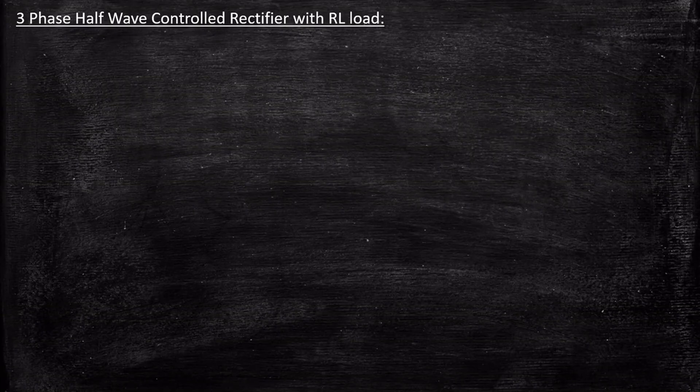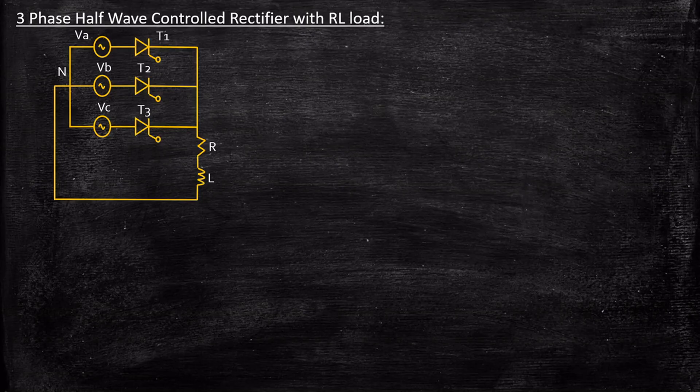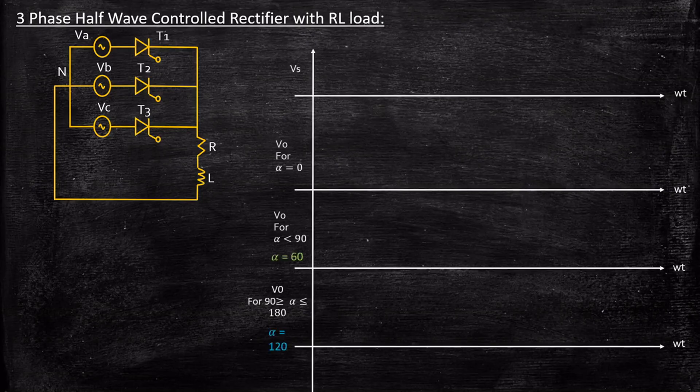Hello everyone. In this video we'll be taking a look at three-phase half-wave controlled rectifier with RL load. This is the circuit diagram of a three-phase half-wave controlled rectifier with RL load. Previously we had seen the same circuit with an R load. The operation is almost similar but with slight differences due to the influence of an inductor in the circuit. Let's take a look at the detailed operation by looking at the waveforms.